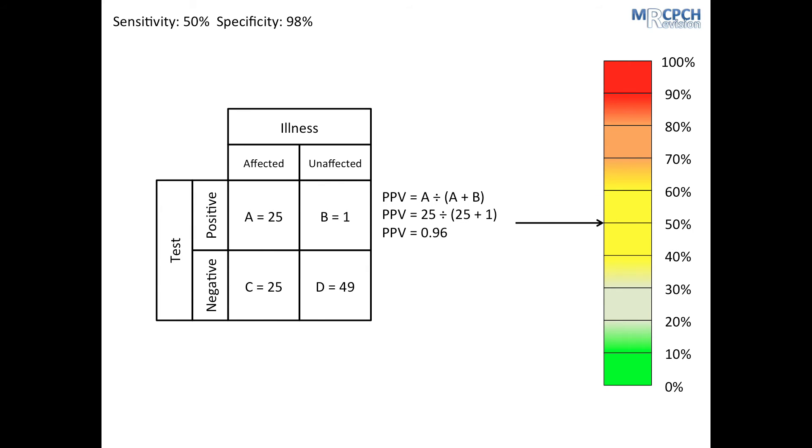Since positive predictive value is a proportion of people that test positive who actually have the illness, this gives us our post-test probability of UTI. In this case, a positive urine nitrite would be really helpful information. But what if the test is negative? We can work out the negative predictive value, which you remember is D divided by C plus D. In this case, that's 49 divided by 25 plus 49, which works out at 0.66.